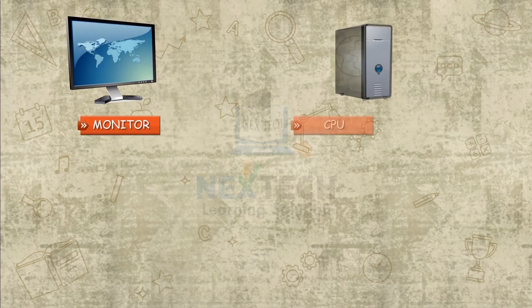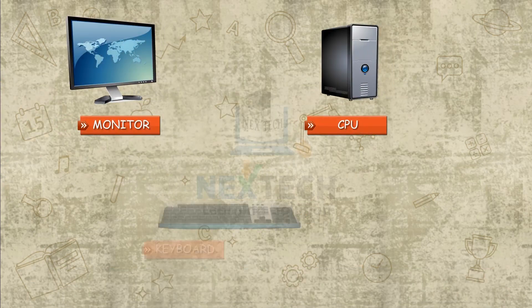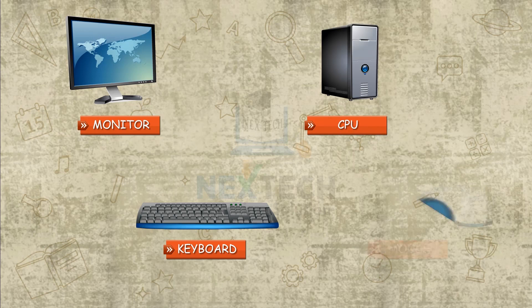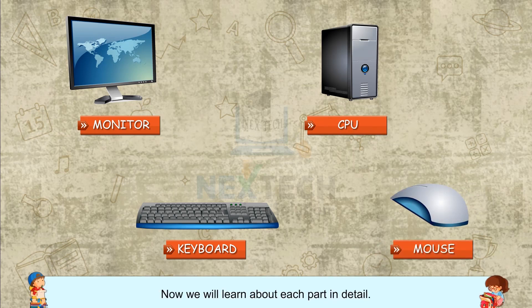The four main parts are: Monitor, CPU, Keyboard, and Mouse. Now we will learn about each part in detail.